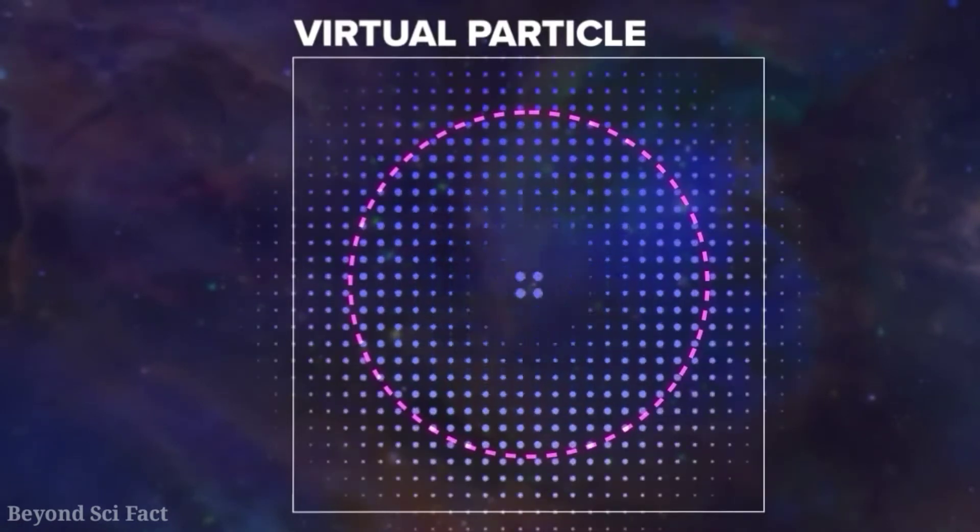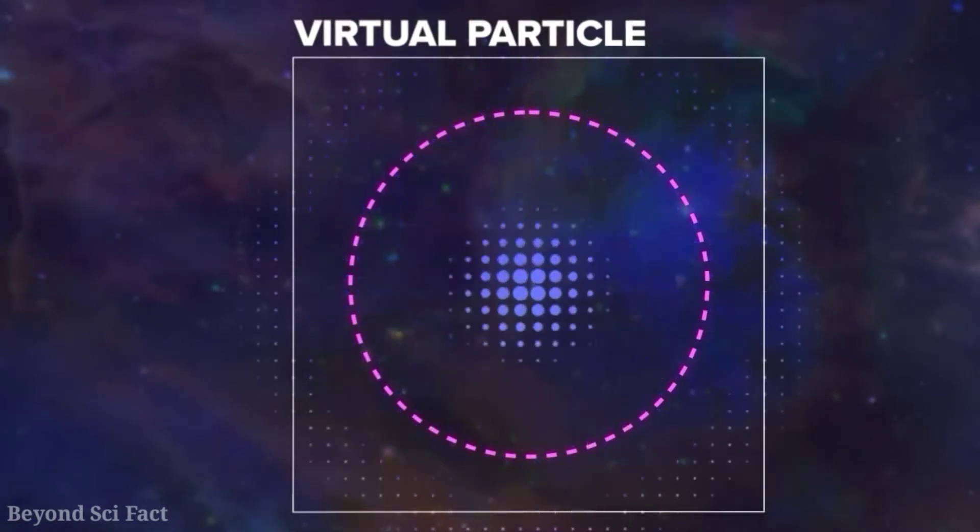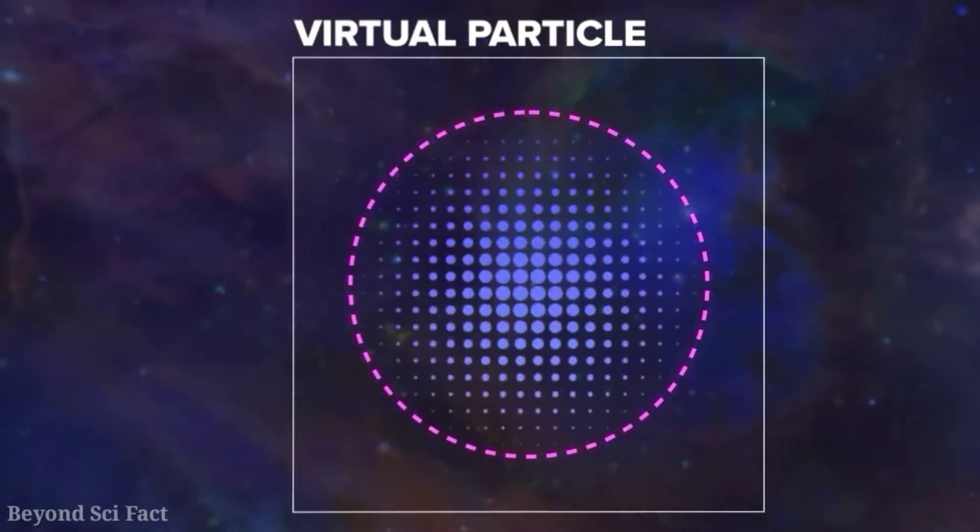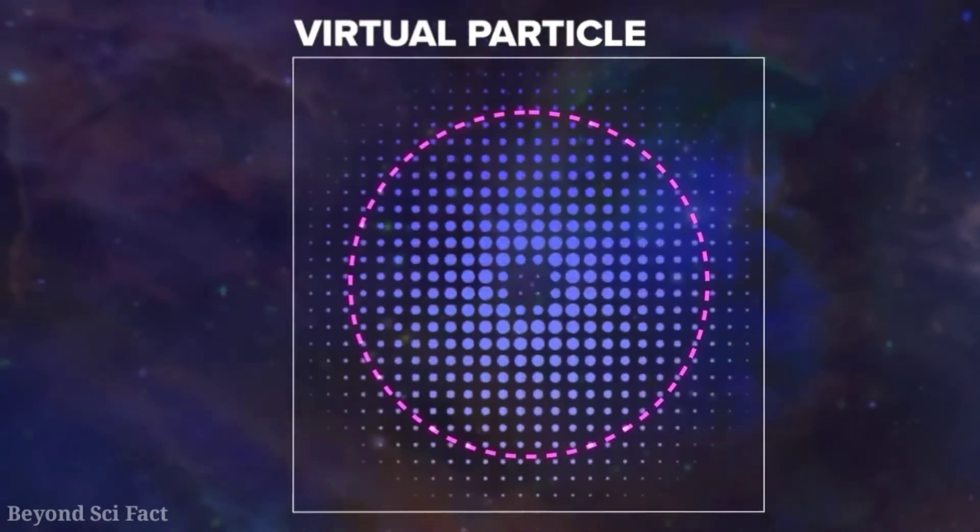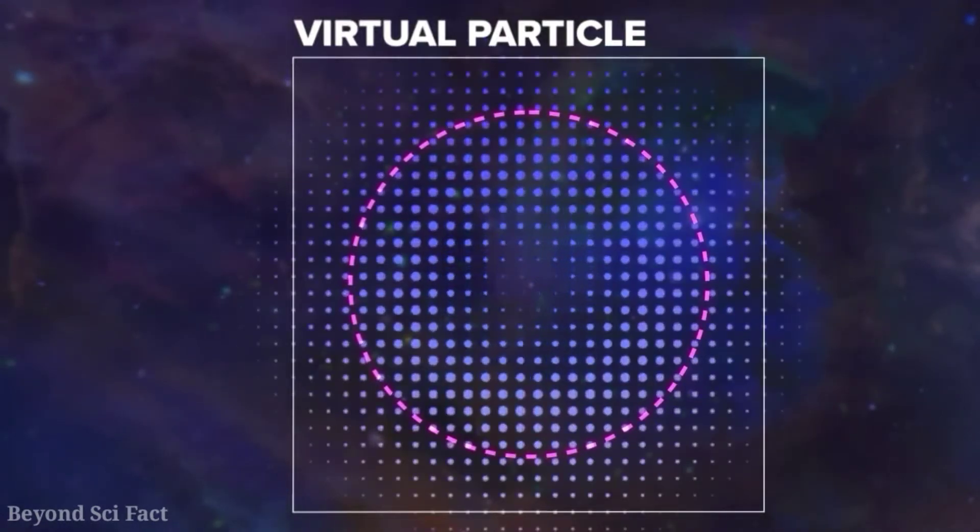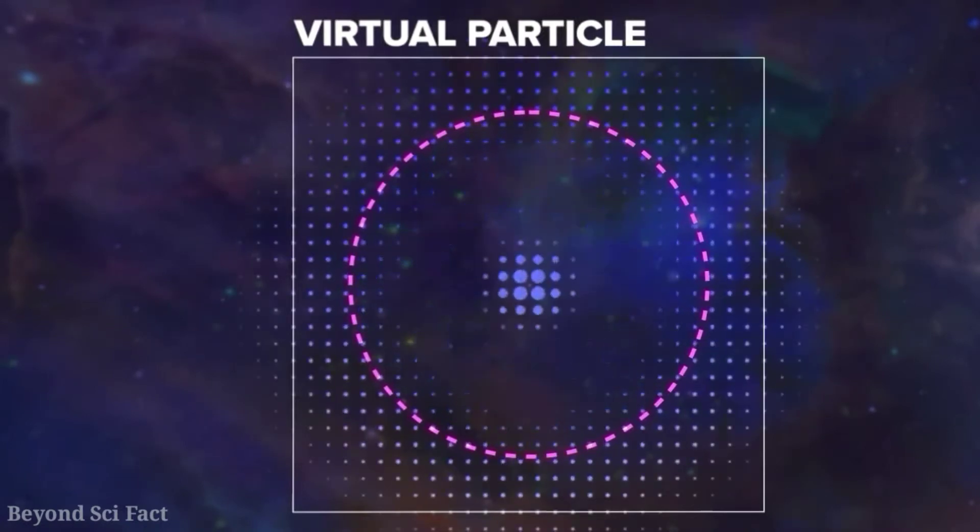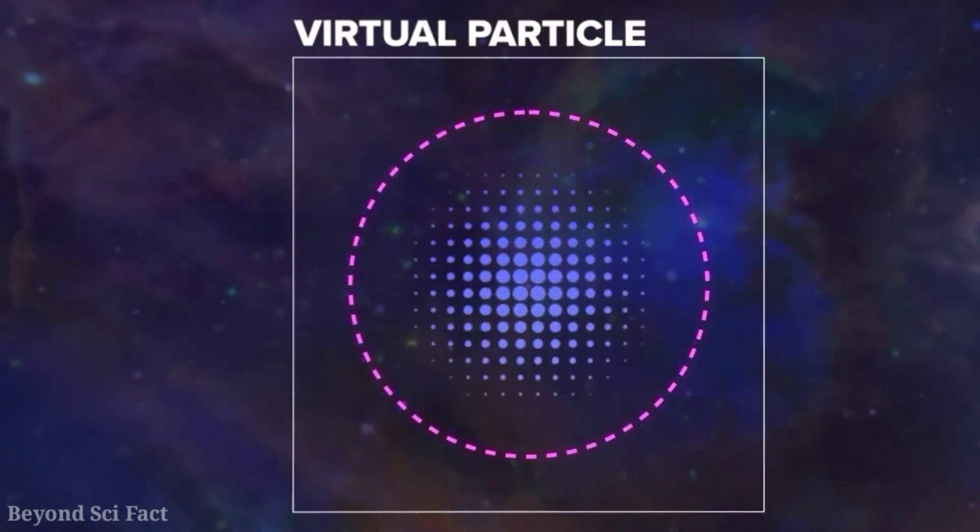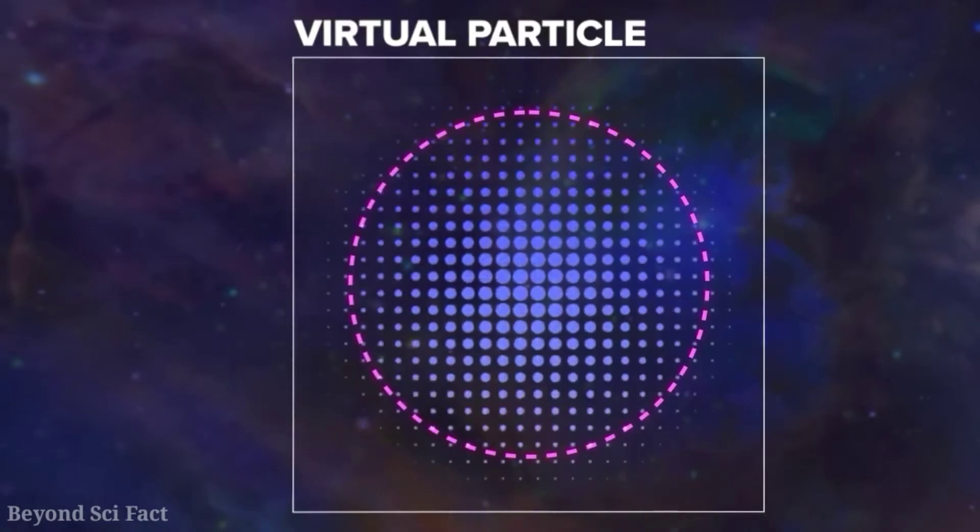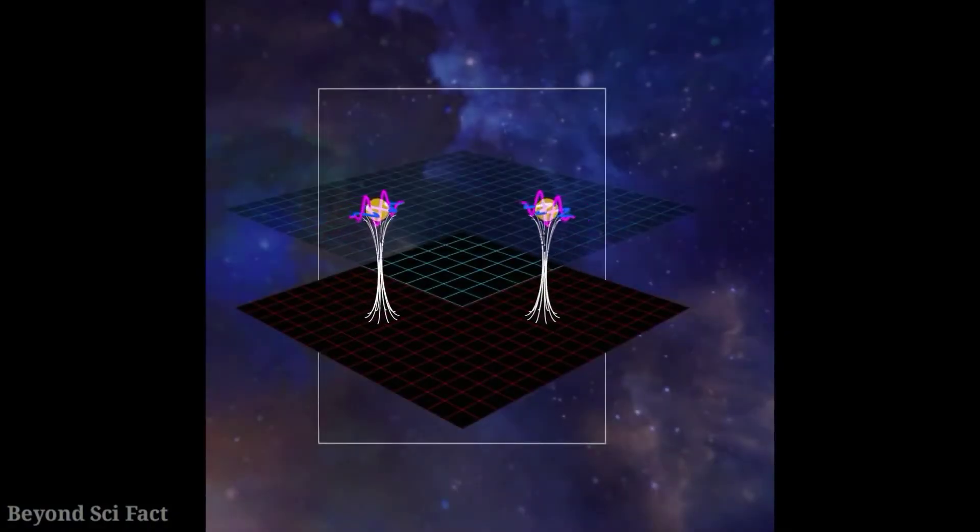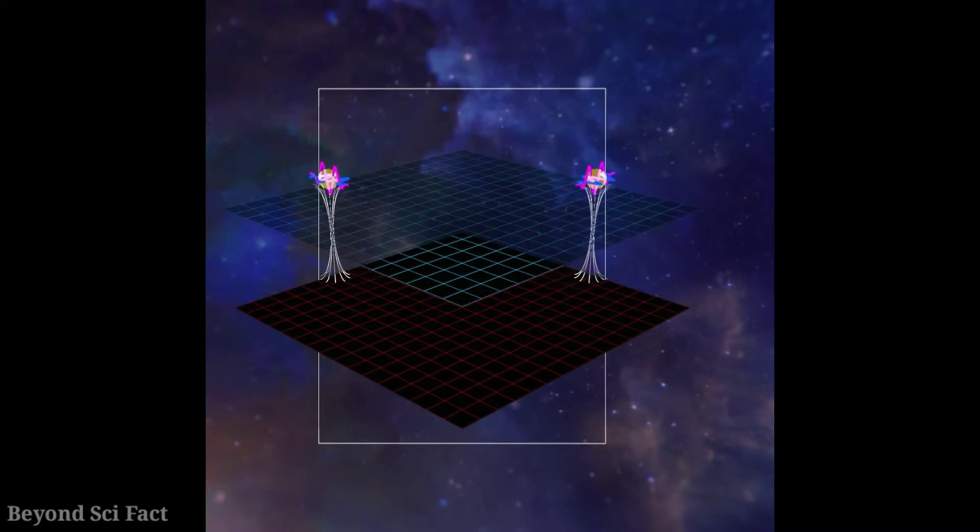So let us take a quick recap of what we have understood in this video. Virtual particle is not like a real particle. Their properties are different from real particles. Like their mass may vary. That means sometimes it fluctuates to very high and sometimes it's very low. But if it is fixed, then it will behave like a real particle. It can move back and forth in time. That means it can travel in time. But real particles cannot travel in time.